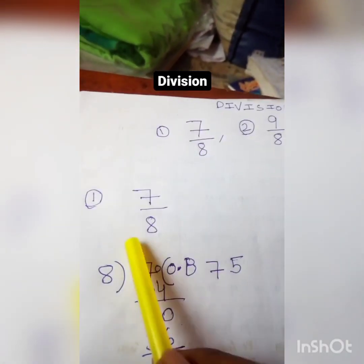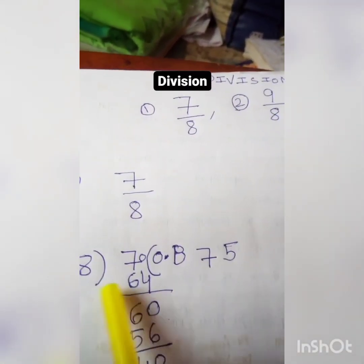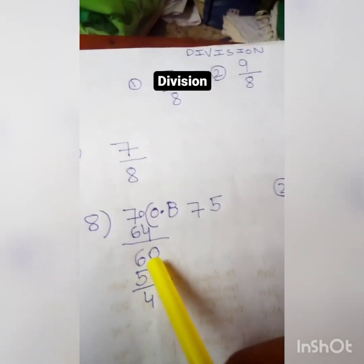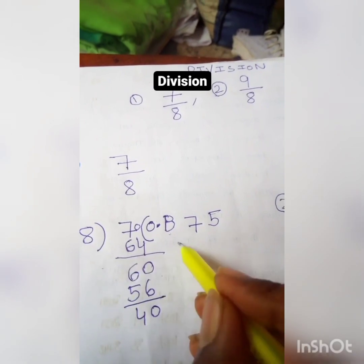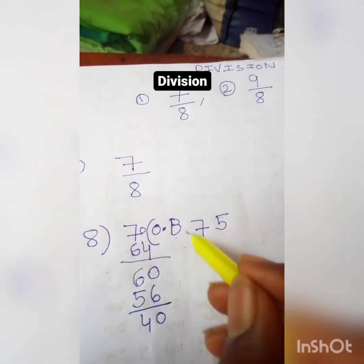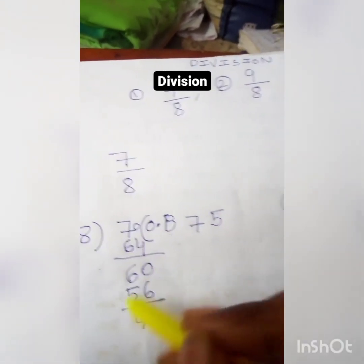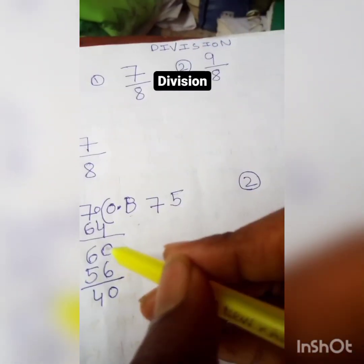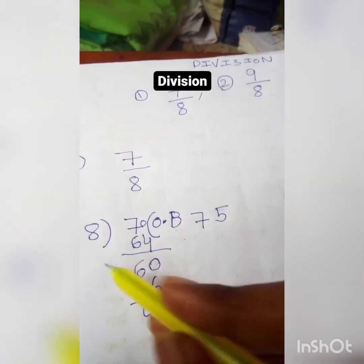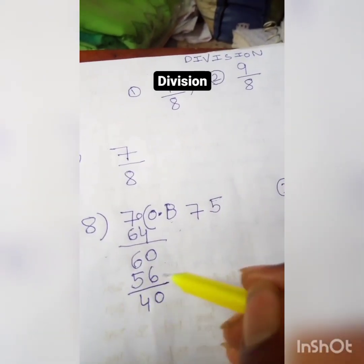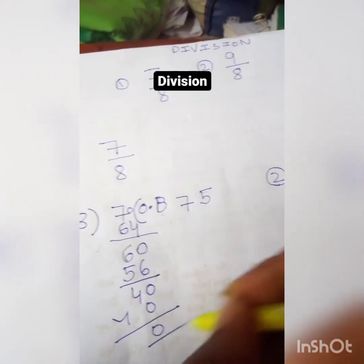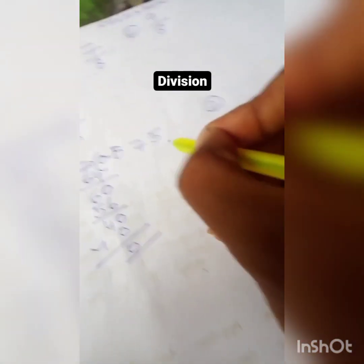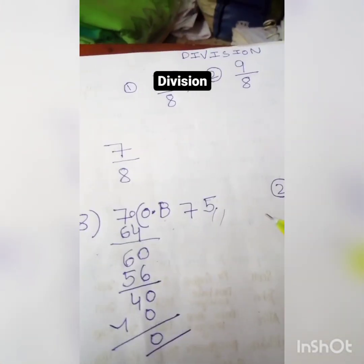8 by 7 is 7 by 8. 8 by 8 is 64. We have 64, which is 6. We have 8 by 6. 8 by 8 is 56. We have 4. 4 is 4. 8 by 8 is 14. Thank you.